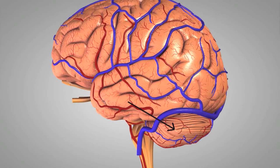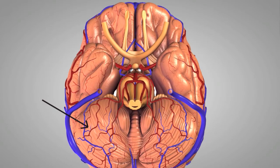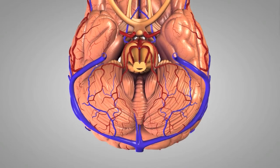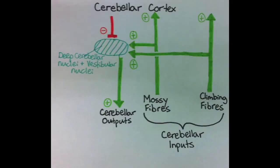The cerebellum is a structure attached posteriorly to the brainstem that is involved in adaptive learning and motor coordination. The basic cerebellar circuit has two common excitatory inputs: the climbing fibers and the mossy fibers.